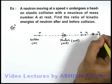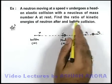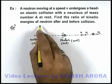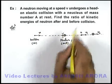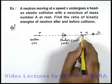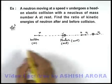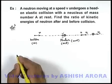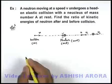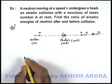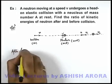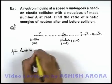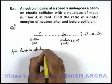So here we are not interested in the speed of nucleus as we are required to find the ratio of kinetic energies of neutron before and after collision. Now in this situation, if neutron speed is v1, we can directly use the expression for speed of a particle after head-on elastic collision.